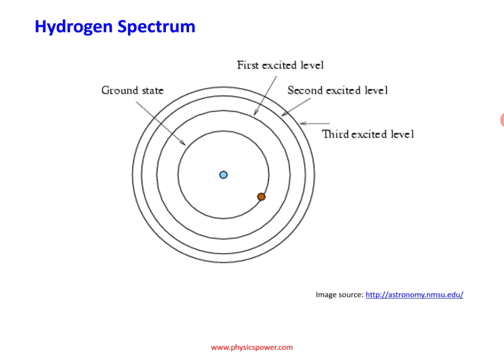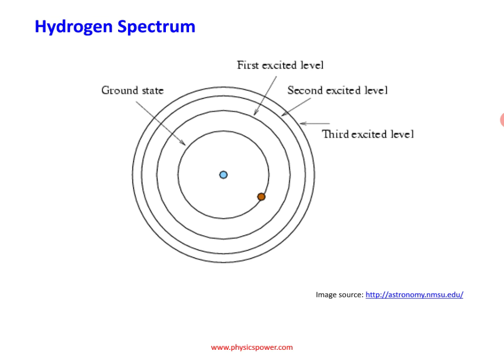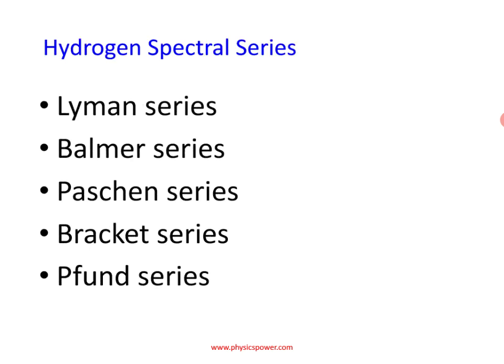To come to ground state, the electron has many possibilities — it may come randomly. For example, from third energy state to second, next second to first, next first to ground state; or directly it can come to ground state; or from third to first, and afterwards directly to ground state. So randomly it can come to ground state, meaning different frequency possibilities are there, and these possibilities were analyzed by different scientists who designed series.